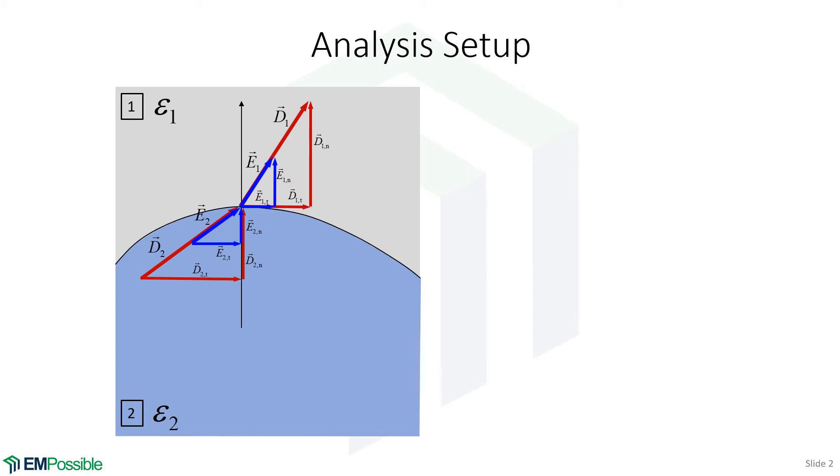One last thing to define, and that is the angle of the fields relative to the surface normal. So this vertical arrow here is drawn perpendicular to the surface. This is the surface normal. So the angle of E1 and D1 is theta one. And that's the angle between the field and the surface normal. It is not the angle between the field and the surface, it's between the field and the surface normal.